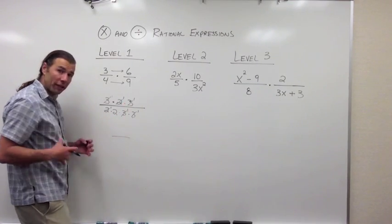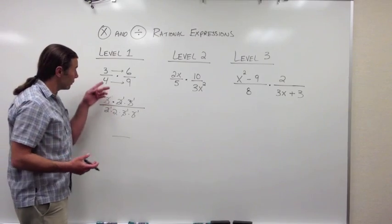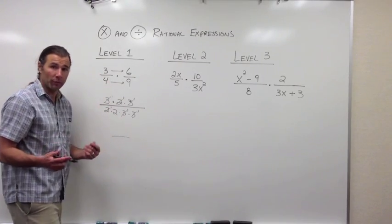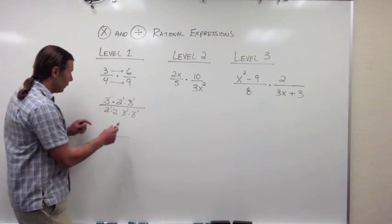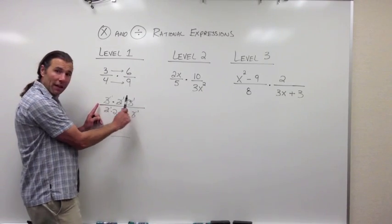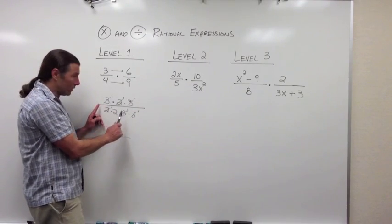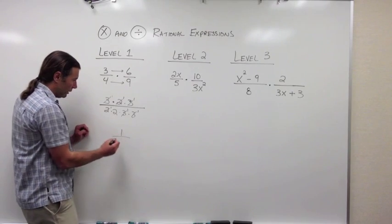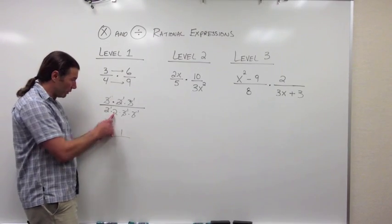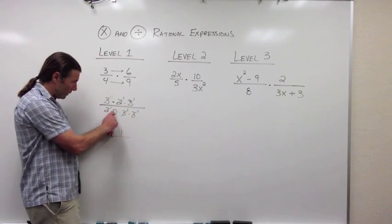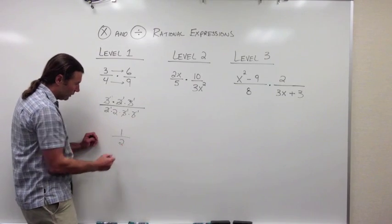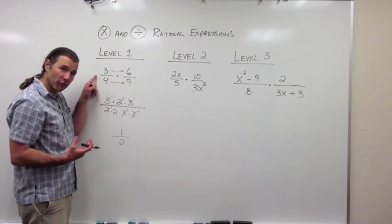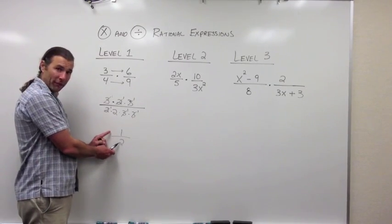Now let's look at our final simplified answer to this multiplication problem. We're simplifying as we multiply. In the numerator, everything divided out, so I have a bunch of 1s — 1 times 1 times 1 is 1. In the denominator, I have 2. If I multiply 2 by a bunch of 1s, I still have 2. So the final simplified answer for this fraction is 1 half.